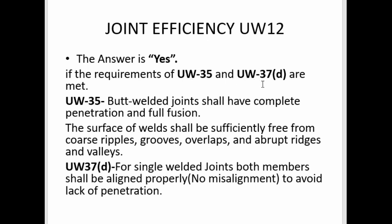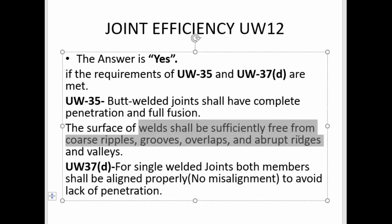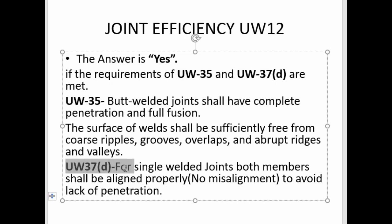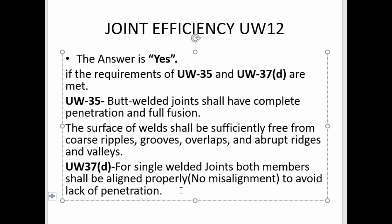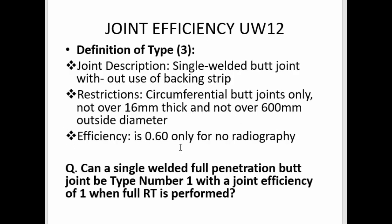This is possible if the requirements of UW-35 and UW-37D are met. UW-35 states that both welded joints shall have complete penetration and fusion, and the surface of welds shall be sufficiently free from coarse ripples, grooves, overlaps, and abrupt ridges and valleys. UW-37D states that for single welded joints, both members shall be properly aligned to avoid lack of penetration — meaning no misalignment shall be present. If the single welded butt joint satisfies UW-35 and UW-37D and full radiographic examination is performed, the joint efficiency also becomes 1.